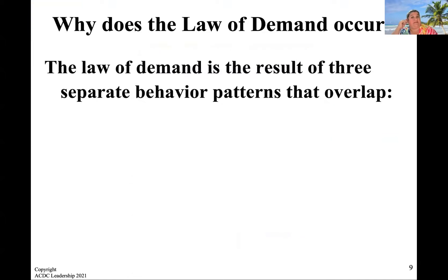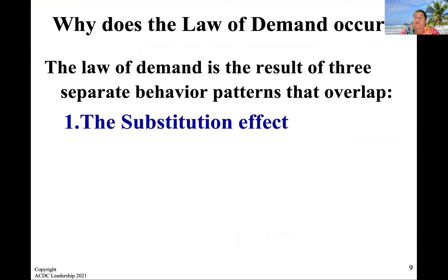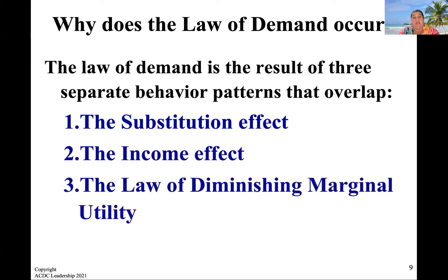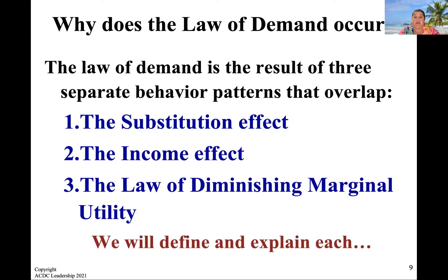So why does the law of demand occur? The law of demand is the result of three different things. Number one, the substitution effect. Number two, the income effect. And number three, the law of diminishing marginal utility. Don't get stuck on those big words — we're going to go through each of them.